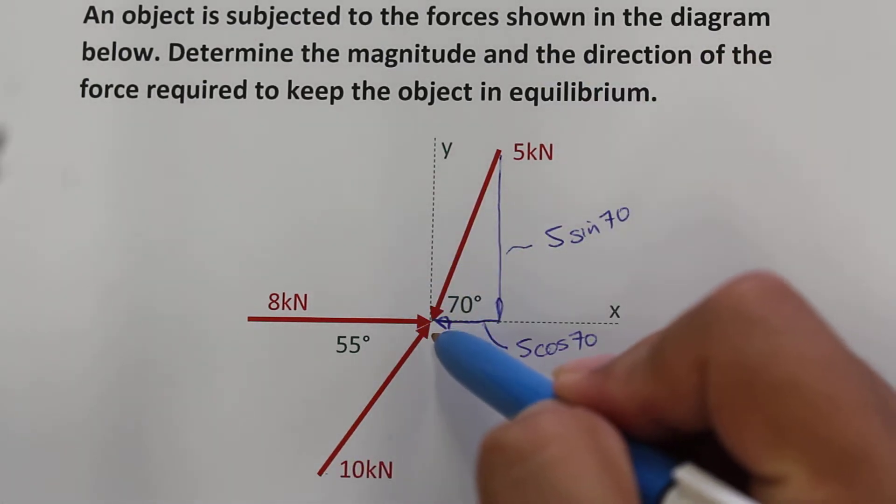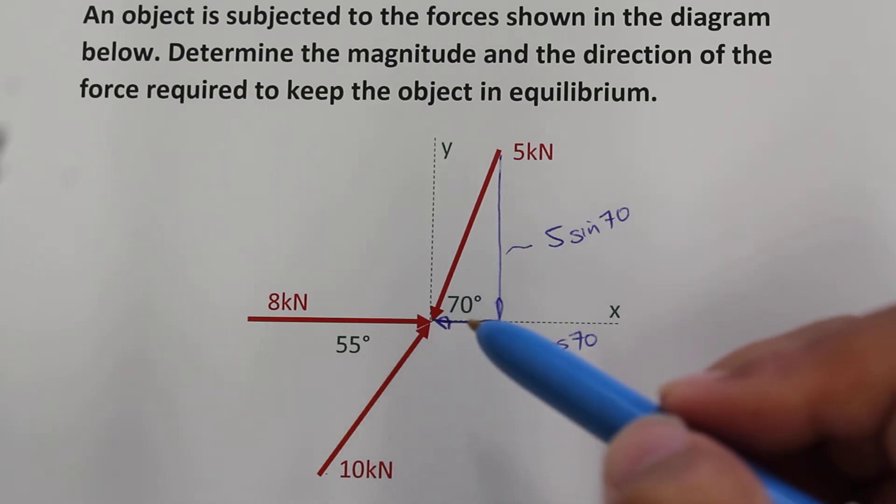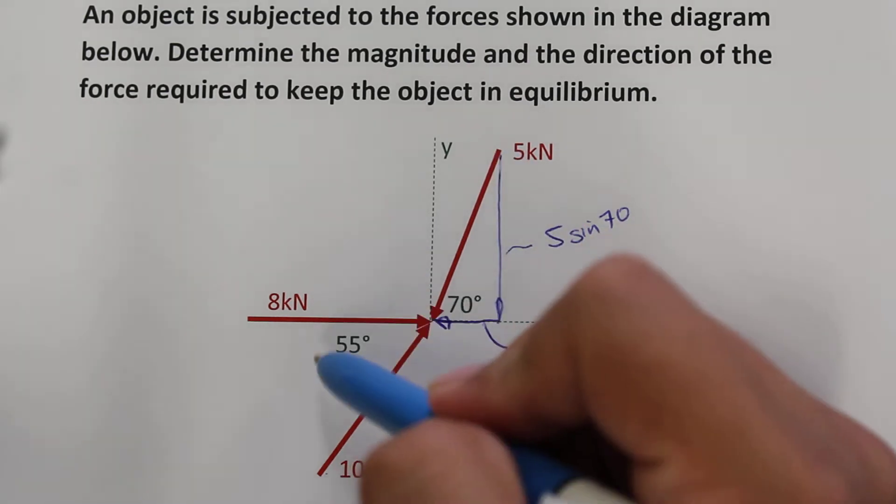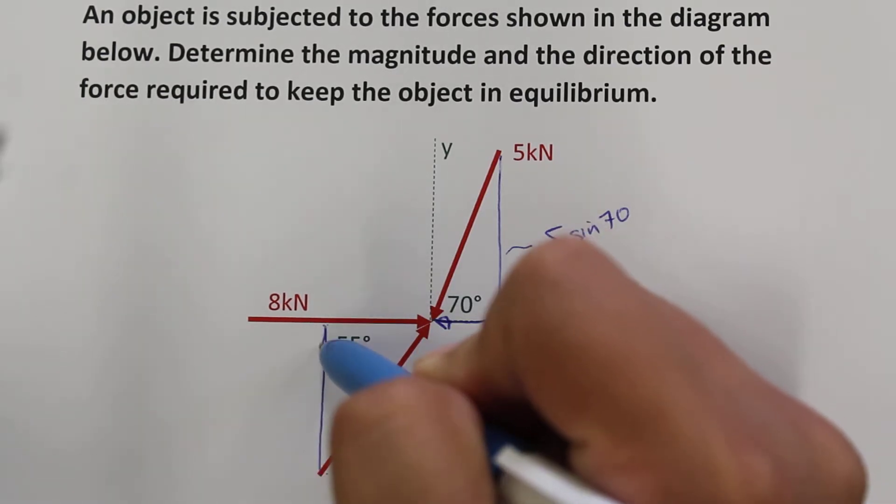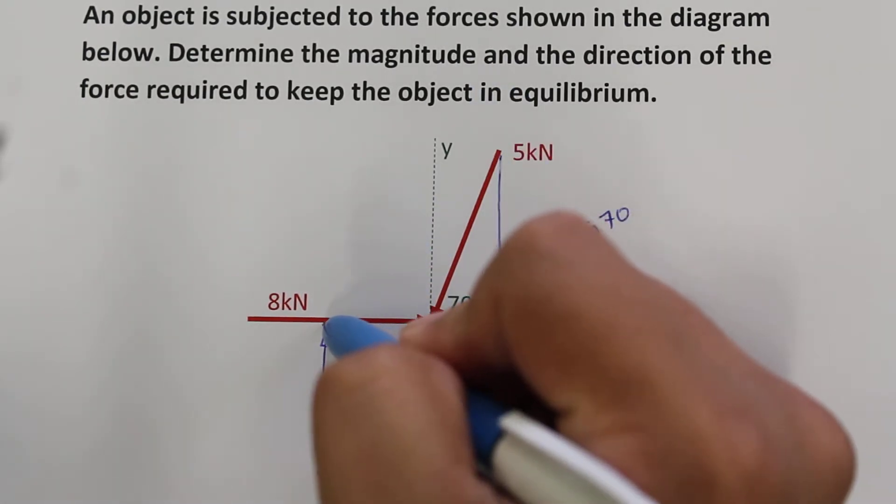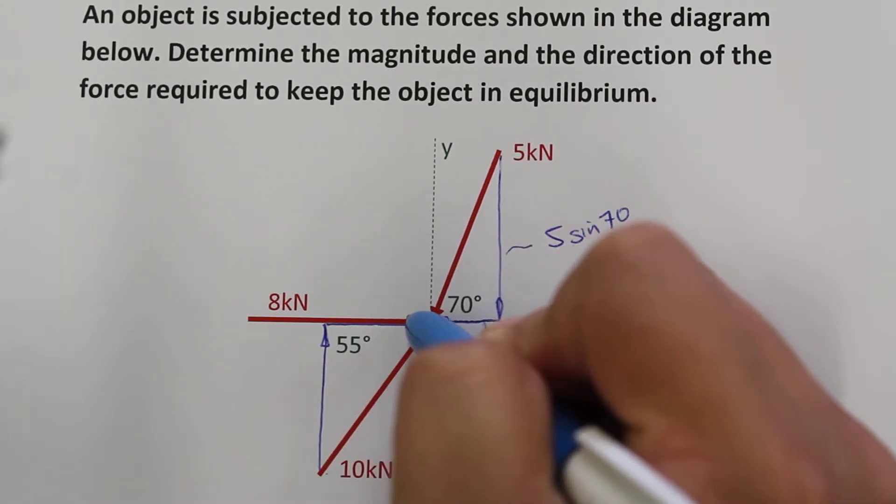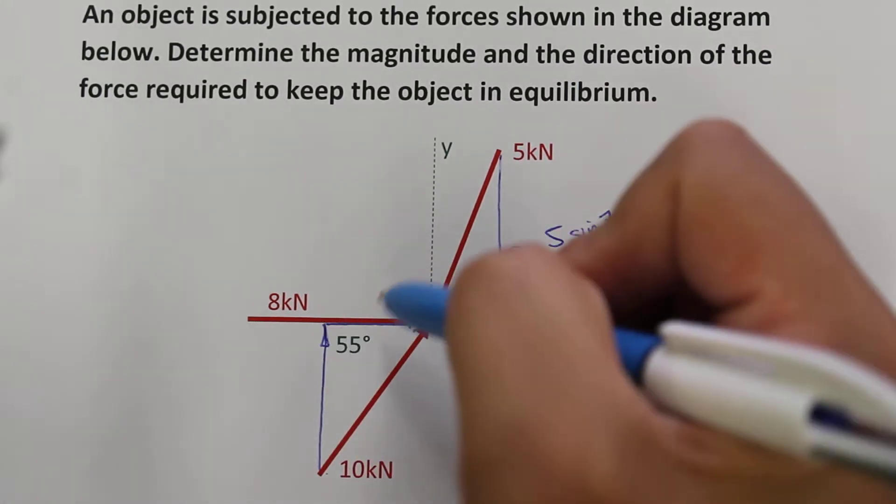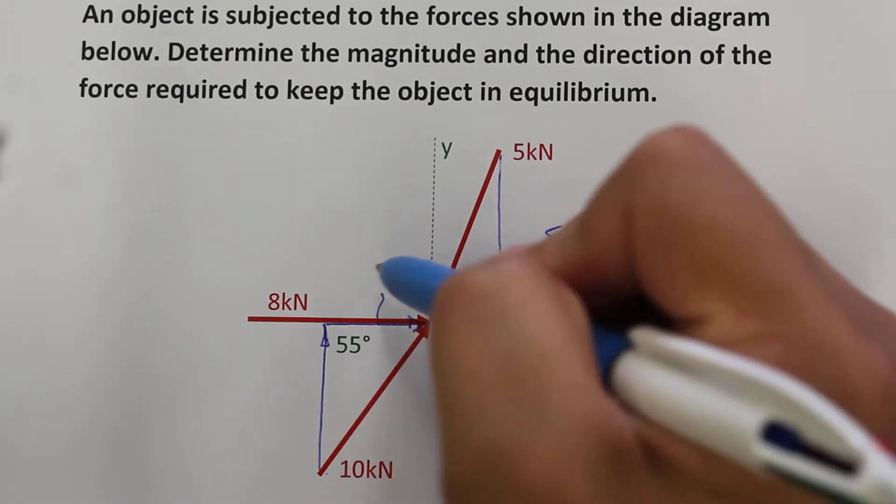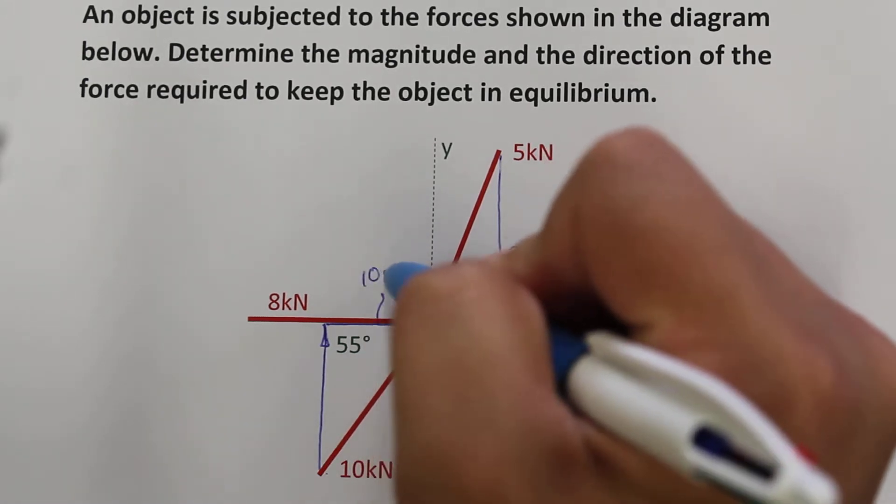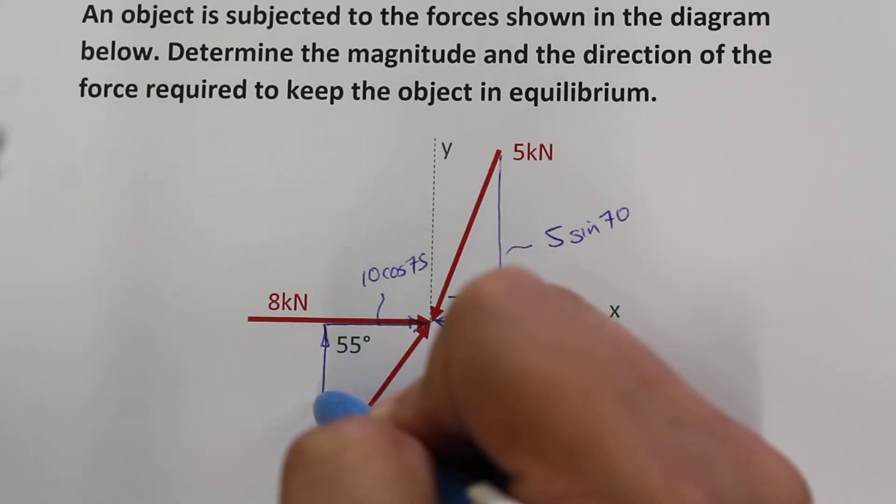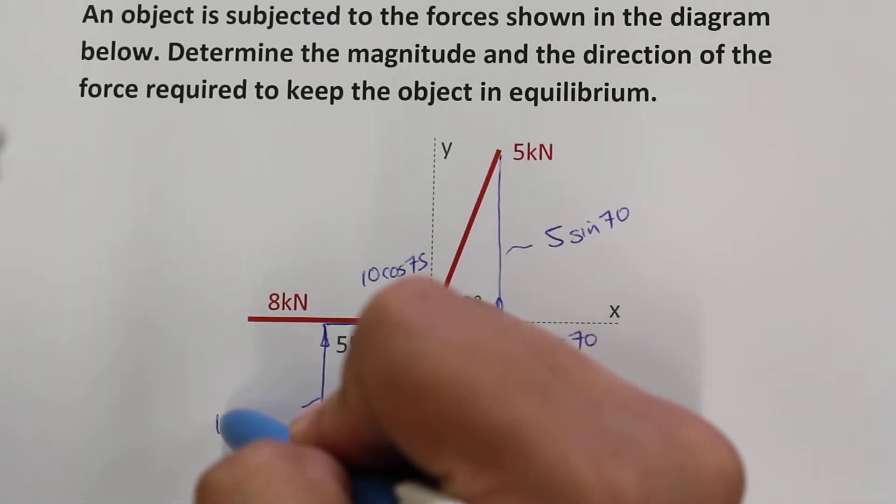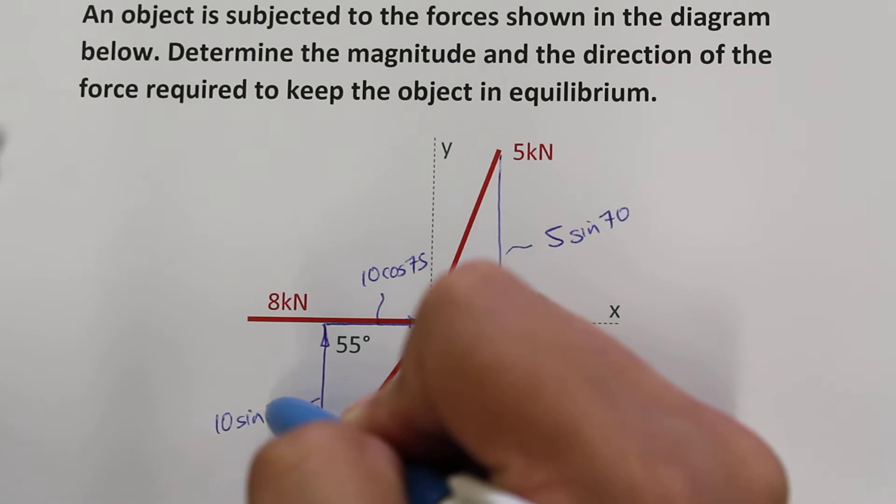This 10kN force can be broken into two components as well. So it has a component going upwards and a component going towards the right. This part here will become 10 cos 75 and this part will be 10 sin 55.